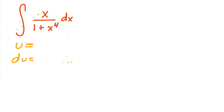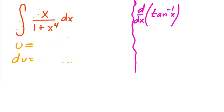After seeing enough of these problems, you'd remember that the derivative of inverse tangent equals 1/(1 + x²), and that kind of looks like our problem. The issue is that we have x⁴, not x². So we need to figure out a way to turn x⁴ into u² — what would u have to equal?